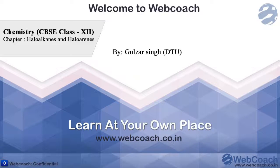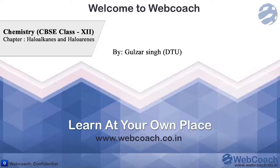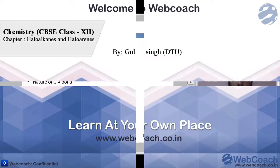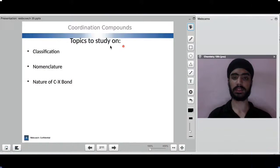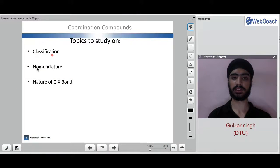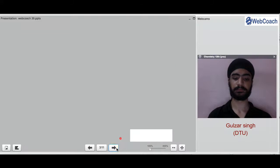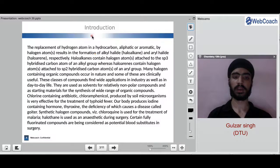Hello, this is a session of the 10th chapter, that is the haloalkanes and haloarenes. In this chapter, the topics we will be studying in this session would be the classifications, the nomenclature, and the nature of the C-X bond.